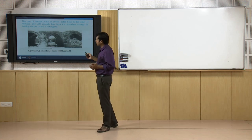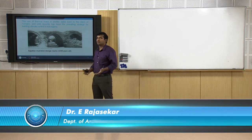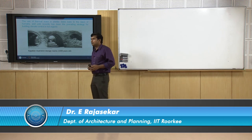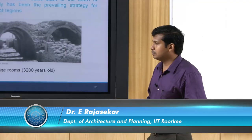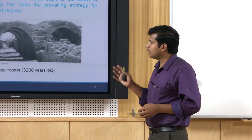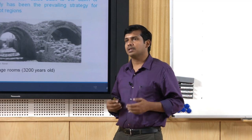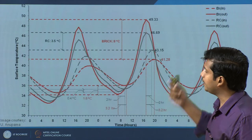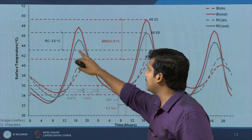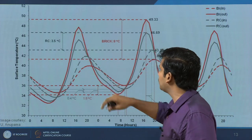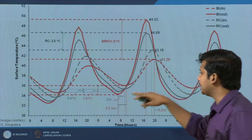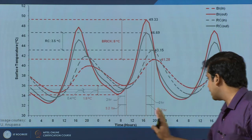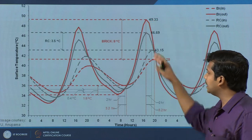We have many traditional examples — not just Egyptian storage areas but indigenous Indian examples from mud houses to palatial spaces where thermal mass or capacitive insulation has been effectively employed. Some measurements we took: two wall systems are compared — the grey line represents one wall system and the red represents another — recorded over three days. We will look at the second day's data more closely.